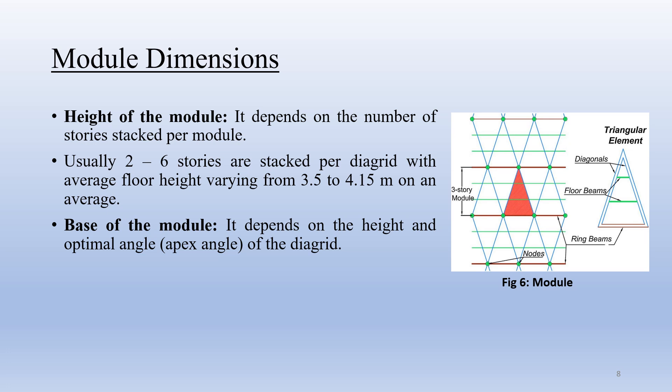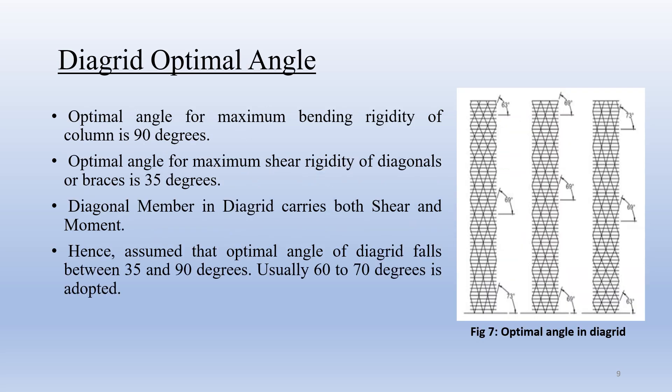The base of the module depends on the height and the optimal angle — that is, the apex angle — of the diagrid. The figure represents a triangular element of a three-story module which includes diagonals, two floor beams, and a ring beam. The optimal angle for maximum bending rigidity of a column is 90 degrees, and for maximum shear rigidity of diagonal braces is 35 degrees. However, since diagonal members in a diagrid carry both shear and moment, the optimal angle of a diagrid falls between 35 and 90 degrees. Usually 60 to 70 degrees is adopted.